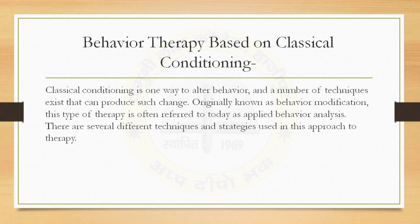Classical conditioning involves forming associations between stimuli. Previously neutral stimuli are paired with a stimulus that naturally and automatically evokes a response. After repeated pairing, an association is formed and the previously neutral stimulus will come to evoke the response on its own.